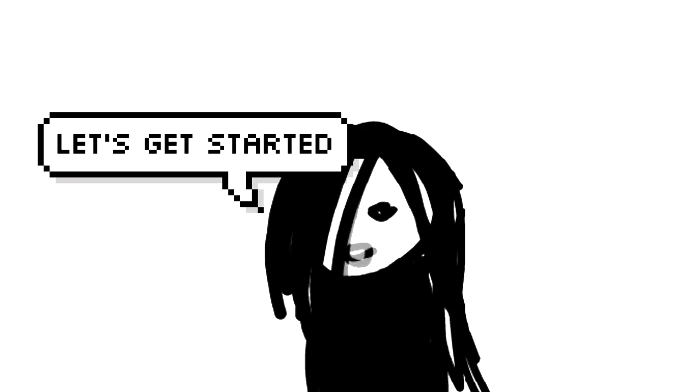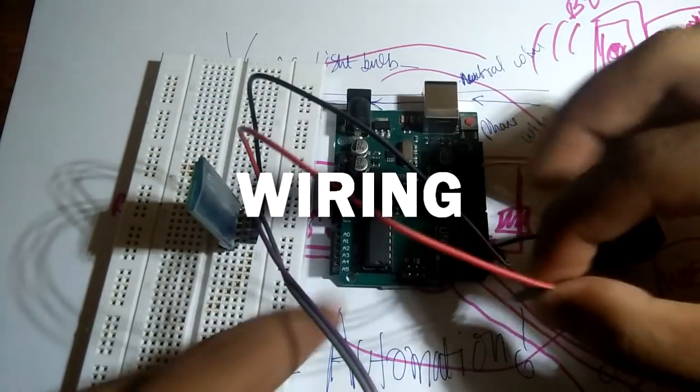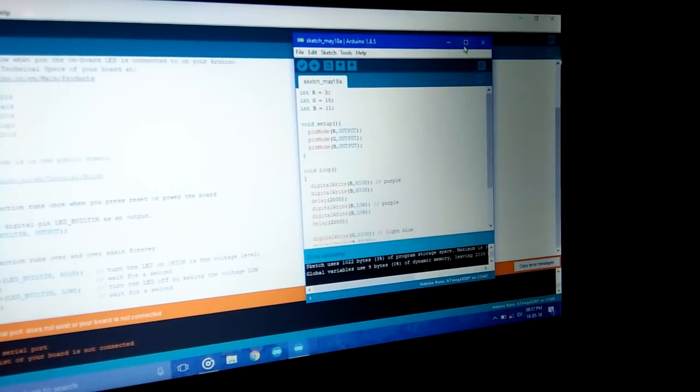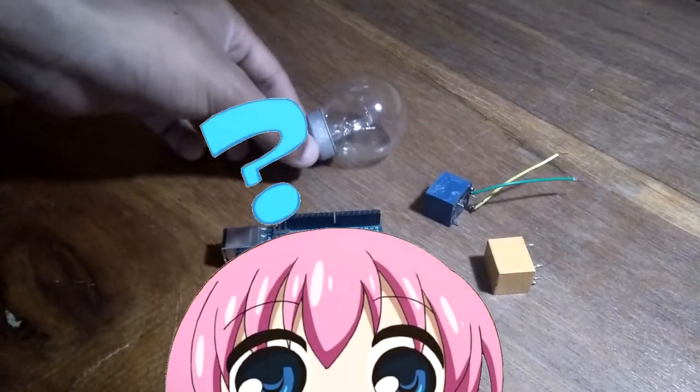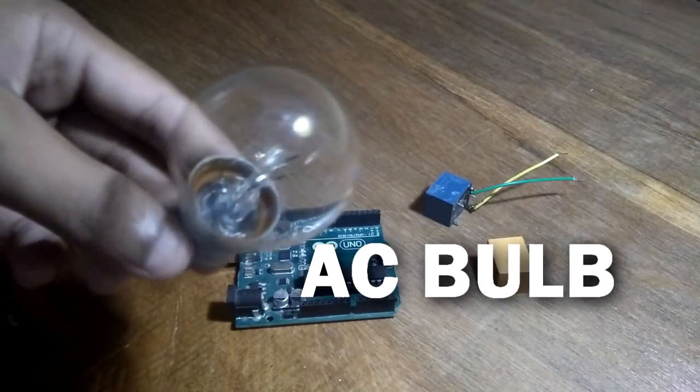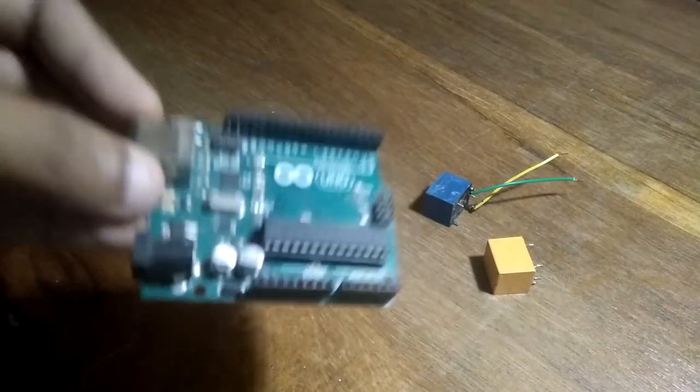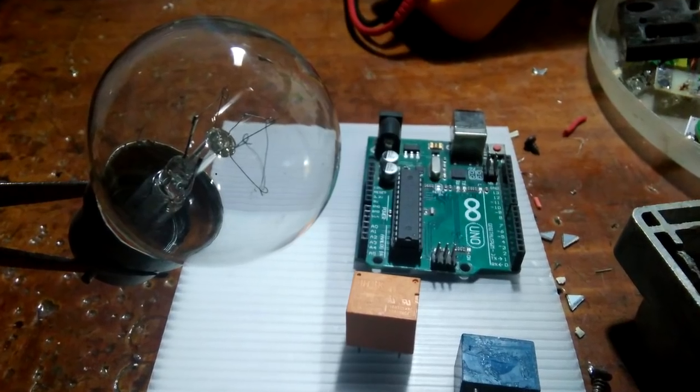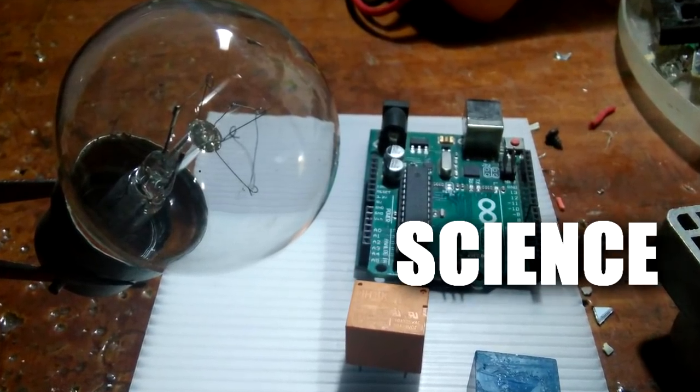So let's get started with our video, but before doing wiring the microcontroller or coding, let's first understand how exactly we are going to control the alternate current bulb with a direct current device. I mean let's first understand a little science behind all these.